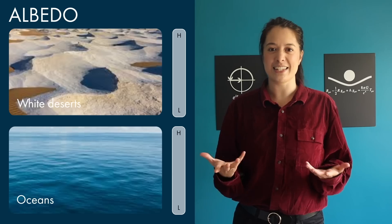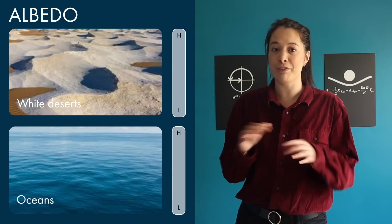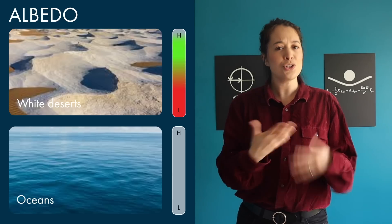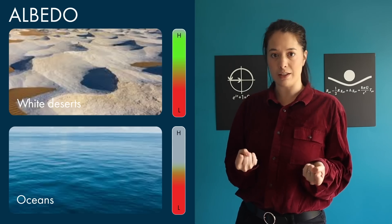Different areas of the Earth's surface have different albedos. For instance, white deserts have a pretty high albedo reflecting lots of sunlight, and oceans have a pretty low albedo, absorbing lots of sunlight.